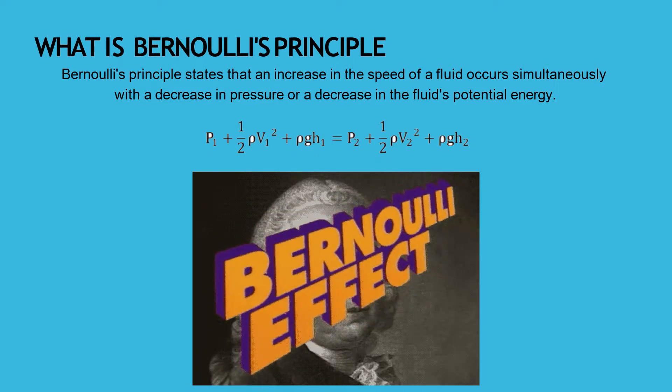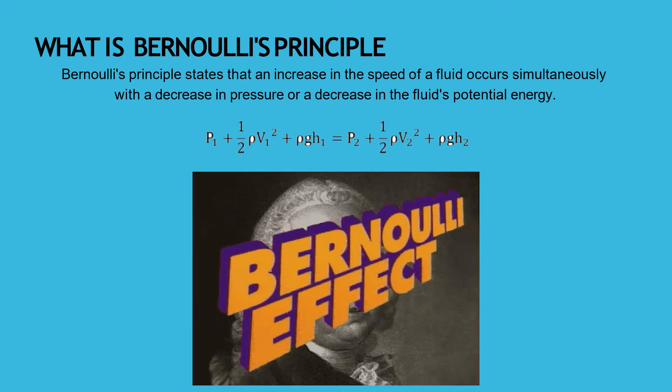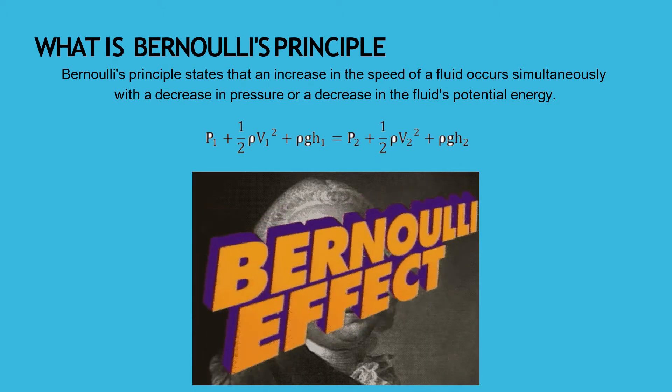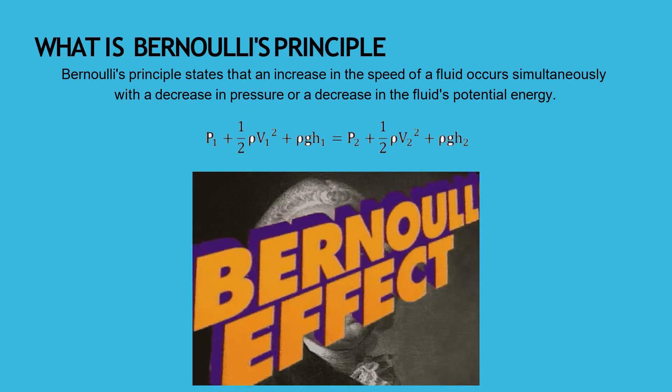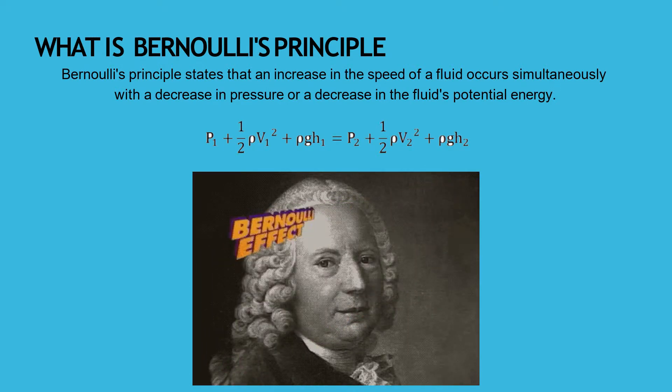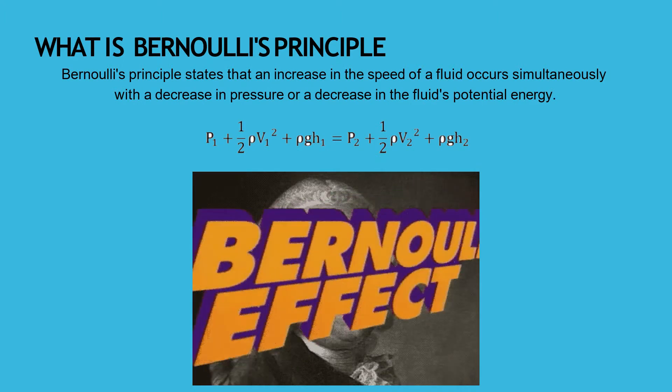In pipes, this usually occurs with a change in diameter, which causes the speed to increase and the pressure to decrease. This is Bernoulli's equation shown here, and Bernoulli himself.